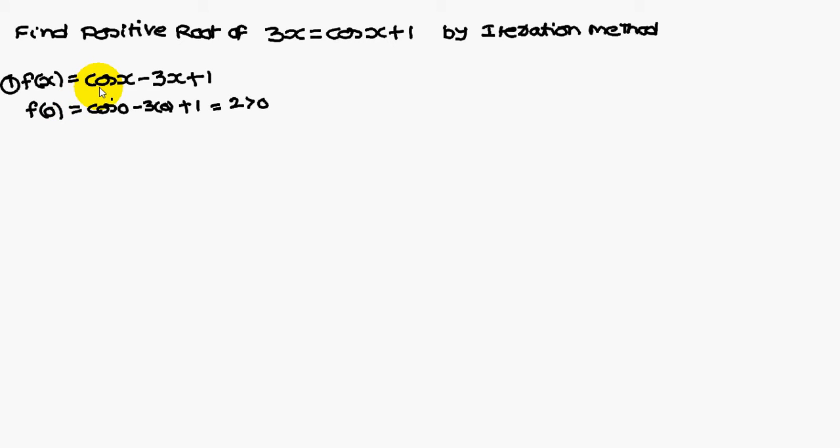Now you put the values in radians. Substitute 0: cos 0 minus 3 into 0 plus 1, that is 2, which is a positive value. Similarly, go for 1, replace x with 1. You are going to get minus 1.4597, which is a negative value.